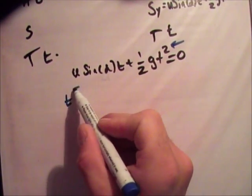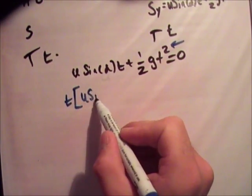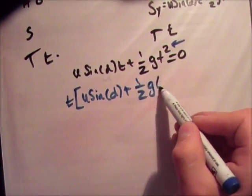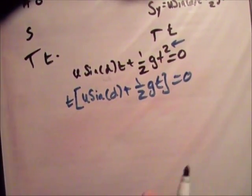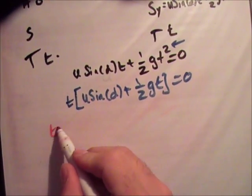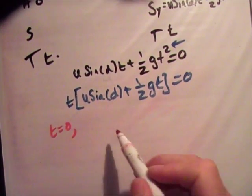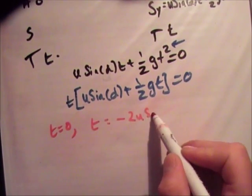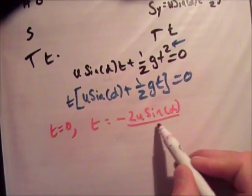So I'm just going to take out t to solve this. And if you have two things multiplied together to get zero, one of them must be zero. So in this case, t is equal to zero, or t is equal to minus 2u sin alpha over g.